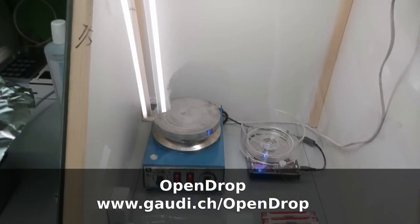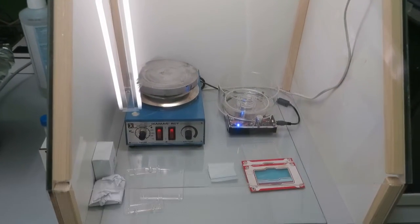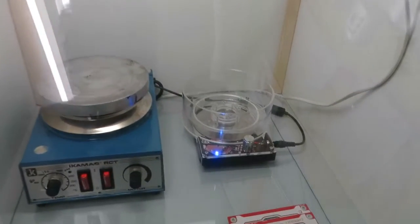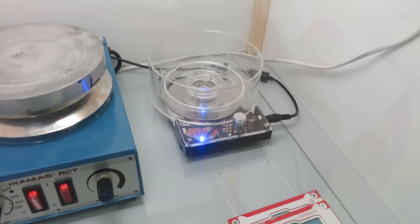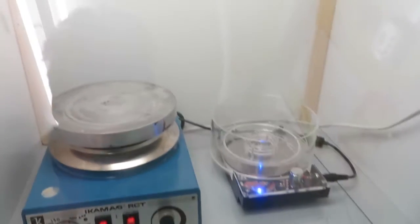To do the coating I built this simple clean room. It's quite important to work clean if you want to get good coatings. In the clean room there is a spin coater made from an old hard drive and a hot plate. The air in the cabin is filtered through this HEPA filter.